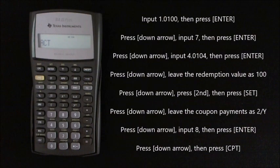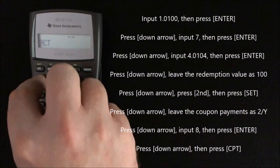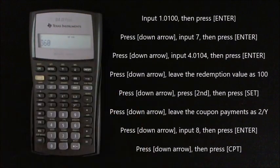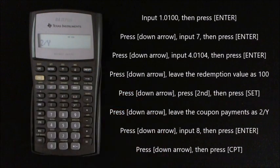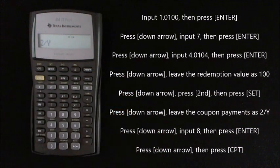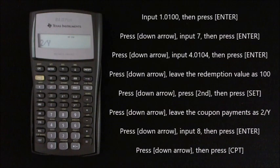Then to change to the 360 day count method, you press second and set. Then down arrow again, you leave the coupons per year as 2.